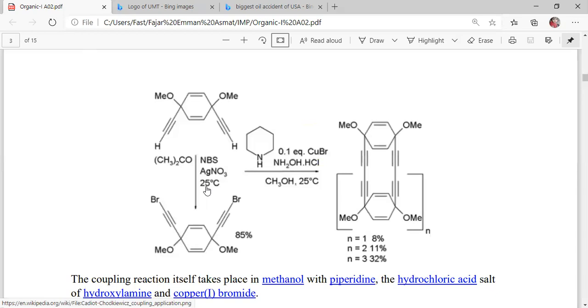This material is also a starting material for silver nitrate. The coupling reaction itself takes place in methanol with piperidine. Piperidine is the hydrochloric acid salt of hydroxylamine and copper(I) bromide.